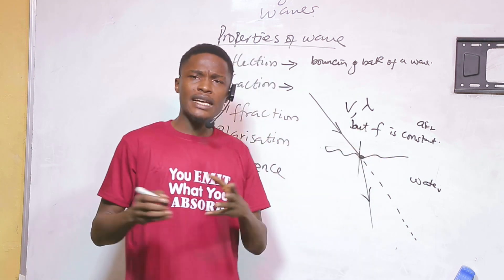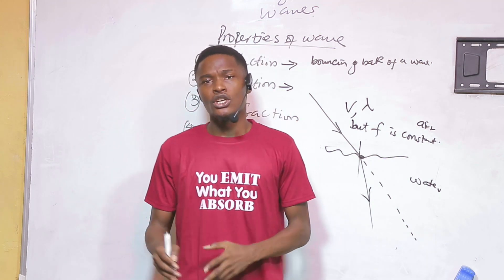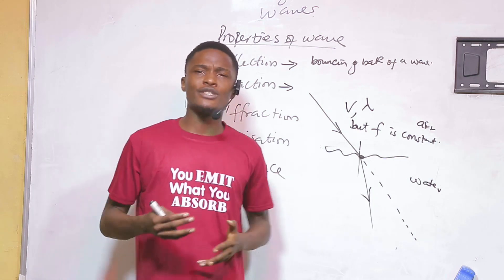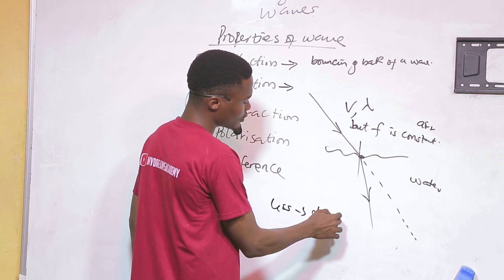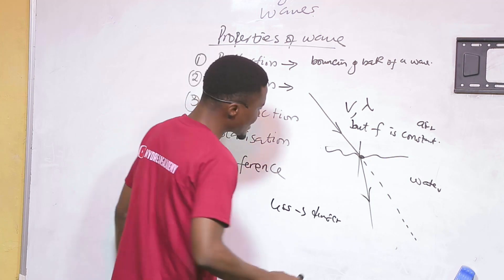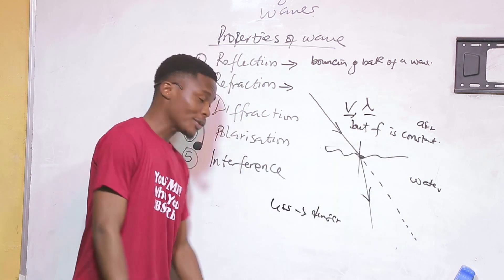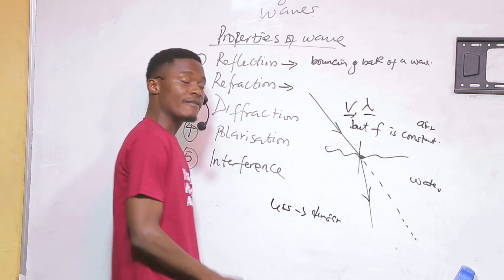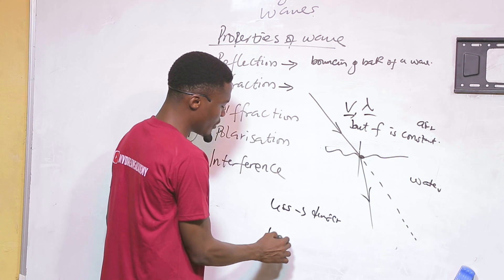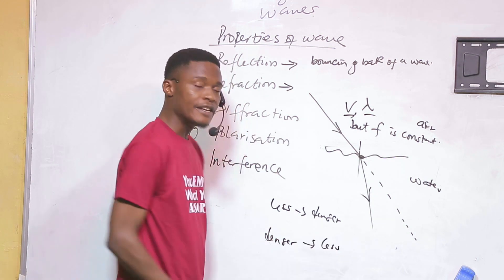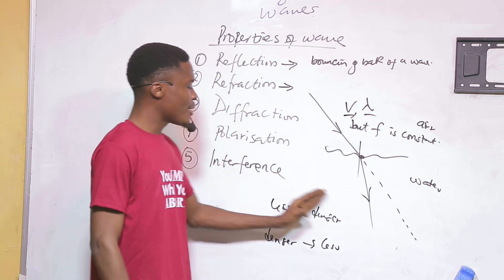We should also know how the speed changes. If the wave is going from a less dense medium to a denser medium, then the velocity and wavelength will decrease. If it is going from a denser medium to a less dense medium, the velocity and wavelength will increase.